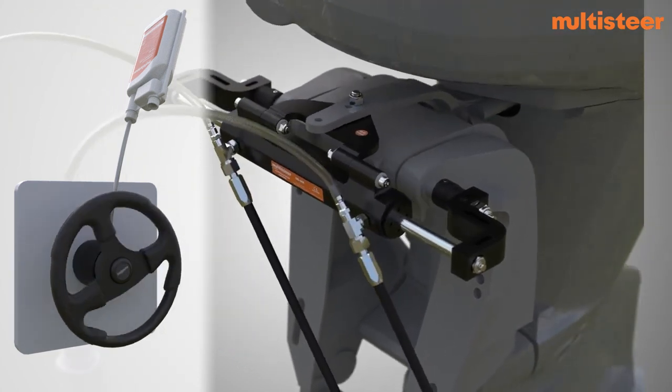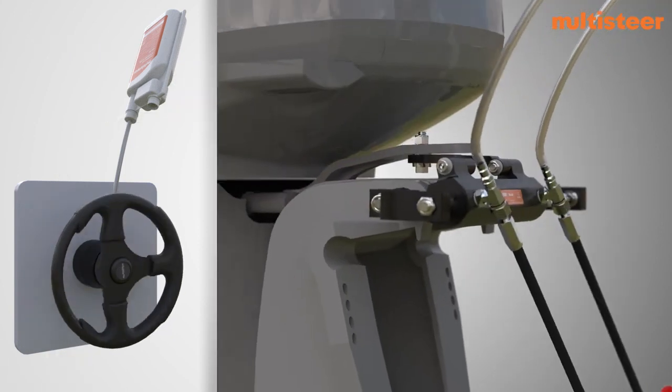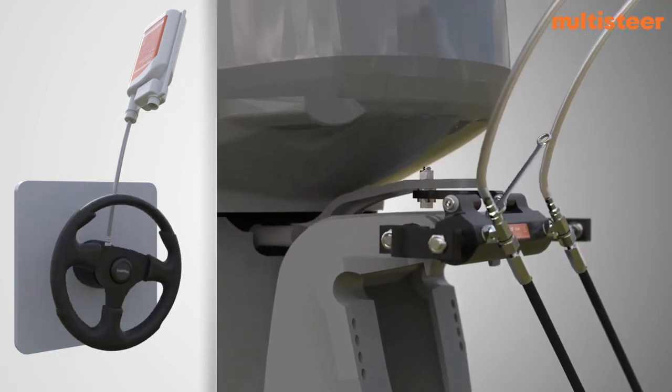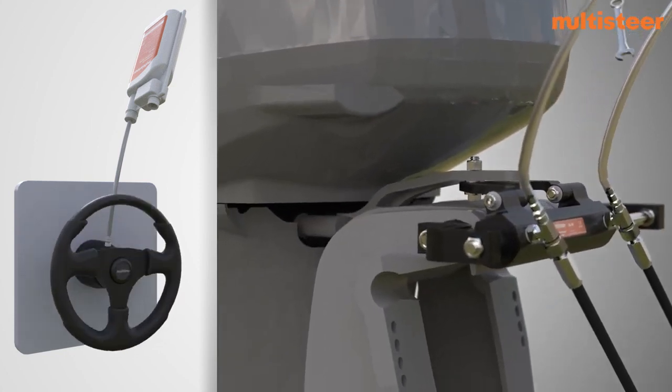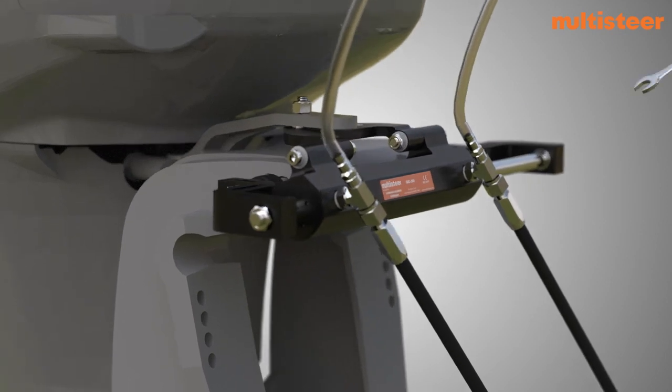Continue to turn the steering wheel in the port side to fill the cylinder chamber. During this phase, the cylinder body will move to the opposite direction, starboard side, up to the end stroke. Repeat above step for port side.